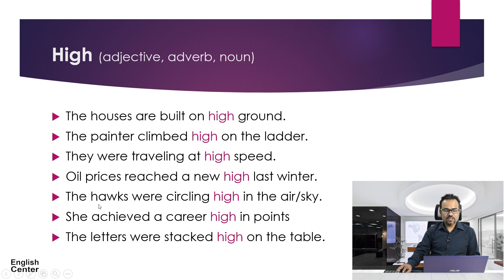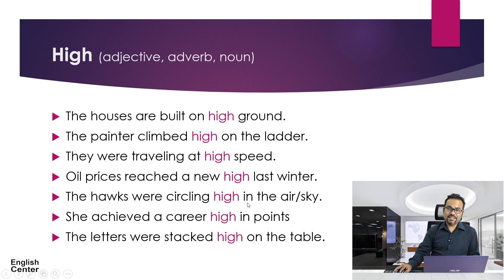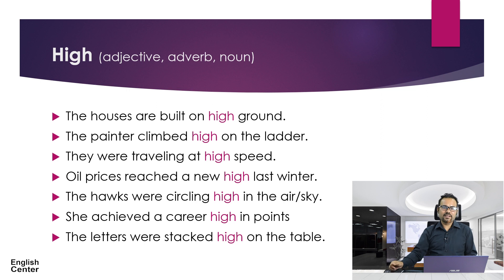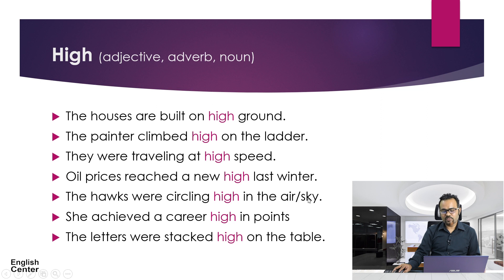What about the other words? 'The' is a determiner, 'hawks' is a noun and definitely the subject, 'were' is an auxiliary verb, 'circling' is the main verb, 'high' is an adverb, and 'in the sky' is a prepositional phrase. Structurally it is a prepositional phrase, but functionally it is acting as an adverbial — because it answers where they are circling. Still if we separate each word: 'in' is a preposition, 'the' is a determiner, and 'air' or 'sky' is a noun.